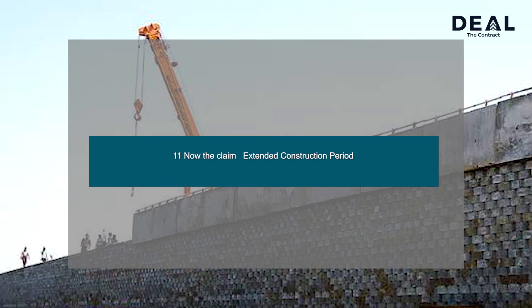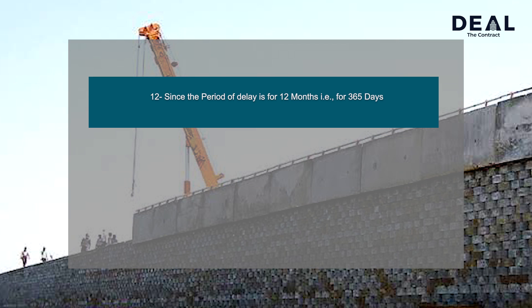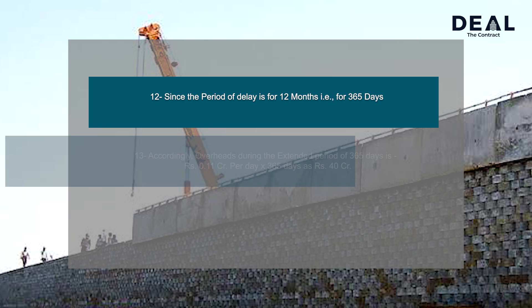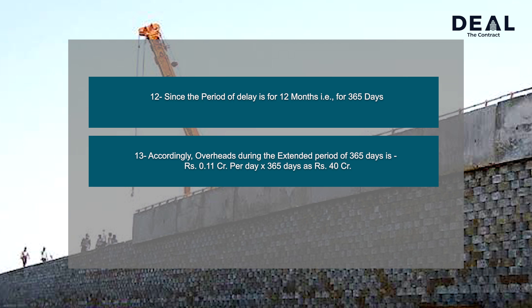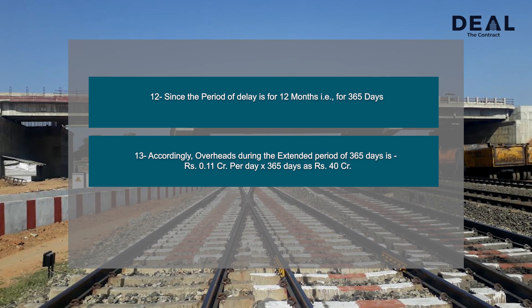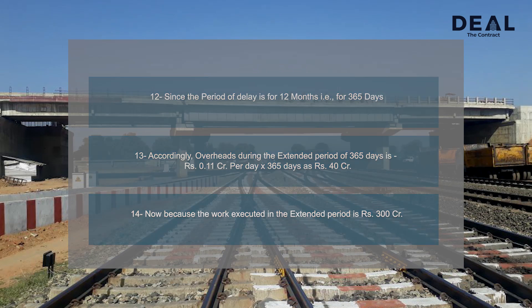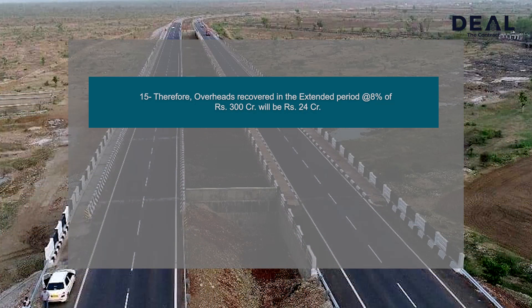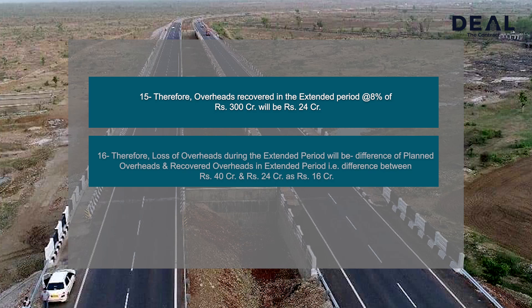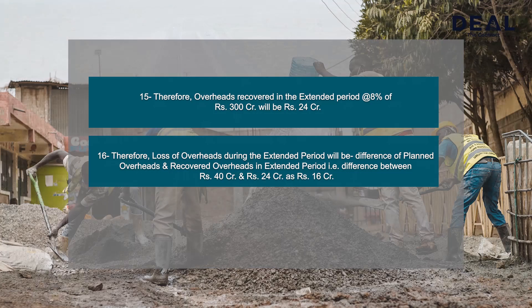Now the claim in the extended construction period: since the period of delay is 12 months, i.e. 365 days, overheads during the extended period of 365 days = Rs. 0.11 crores per day × 365 days = Rs. 40 crores. Because the work executed in the extended period is Rs. 300 crores, overheads recovered in the extended period at 8% of Rs. 300 crores = Rs. 24 crores. Therefore, loss of overheads during the extended period = Rs. 40 crores minus Rs. 24 crores = Rs. 16 crores.